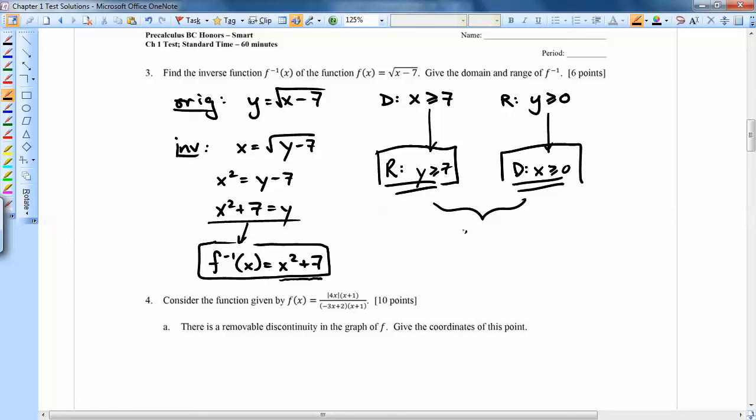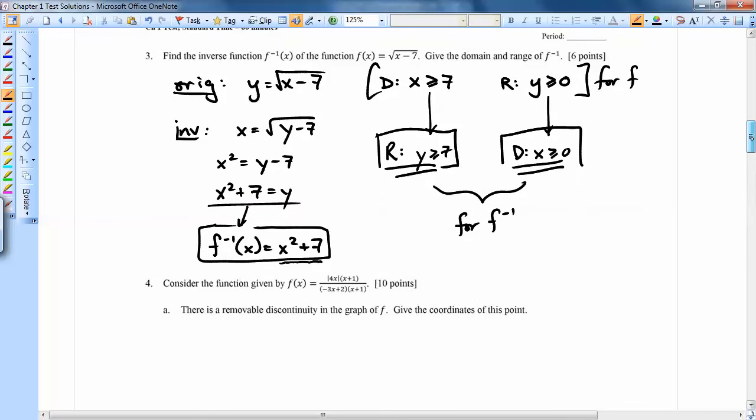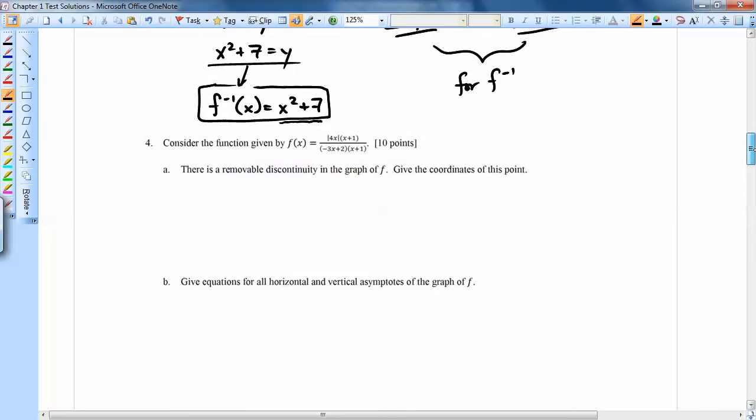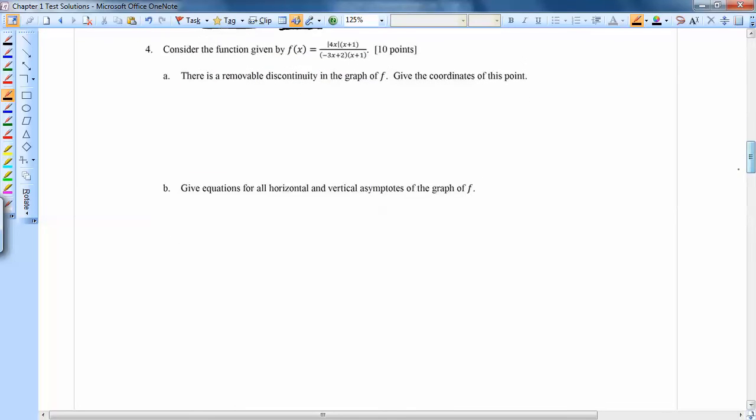All right, so I'll put here for f inverse just to distinguish from these, which are for f. In number 4, we have this strange-looking function with an absolute value and a couple of x plus 1s in there. And it says there's a removable discontinuity give the coordinates.